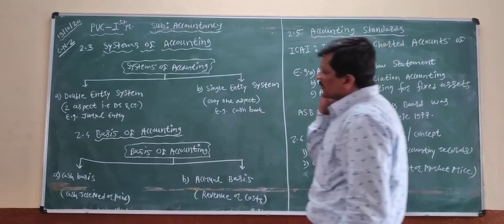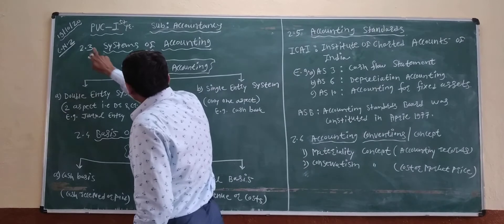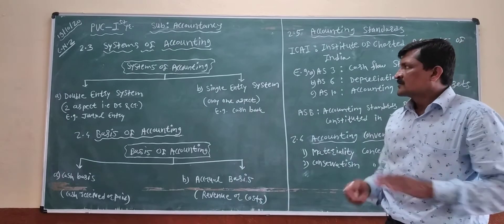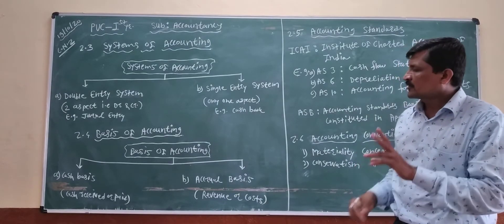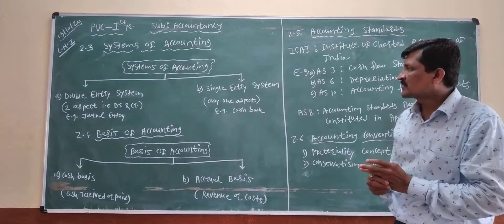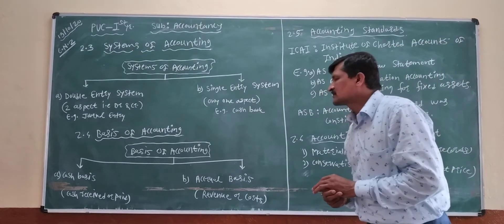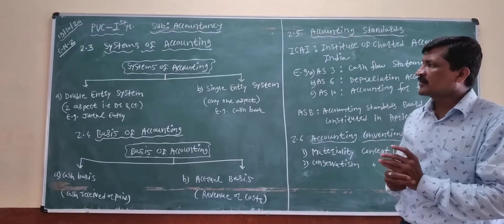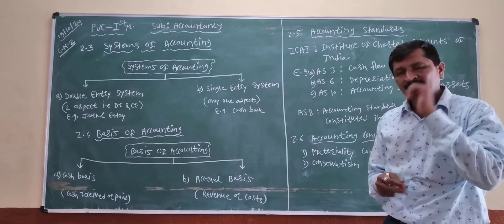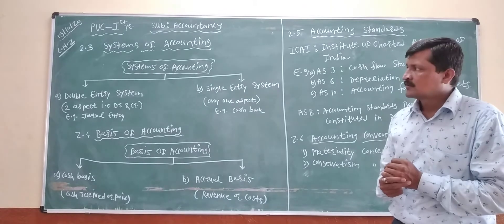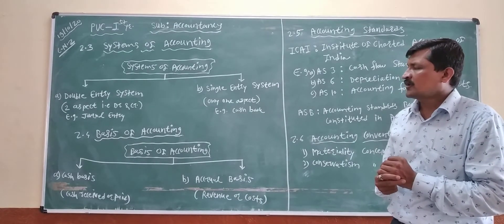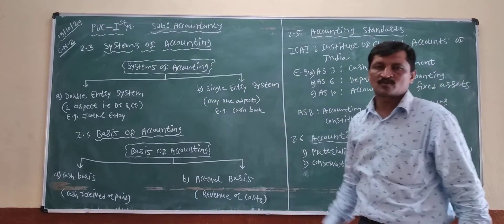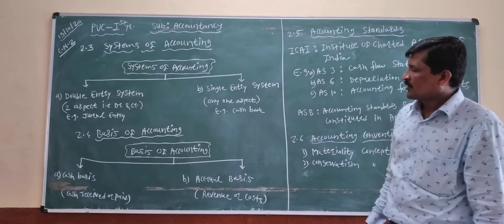Next point is 2.3: The Systems of Accounting. There are two types of systems of accounting. One is a double entry system, another is a single entry system. All business transactions are recorded. Double entry systems are recorded, and maintaining accounting records is the main purpose of the double entry system.